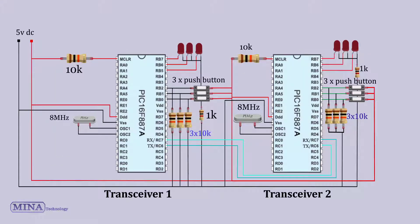Here's the circuit schematic. It has two parts, Transmitter 1 and Transmitter 2. Push buttons and LEDs are connected to port B of both microcontrollers.